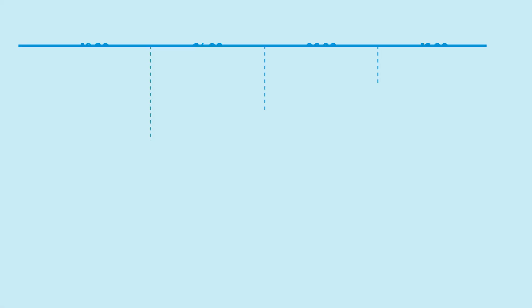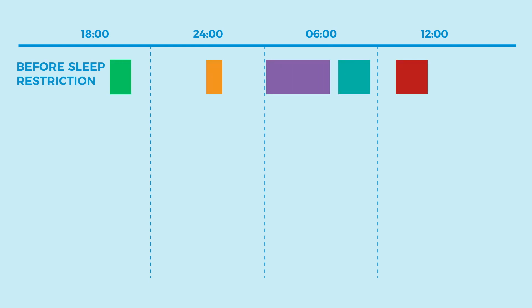Sleep restriction is really about being strict with yourself and only allowing yourself to sleep under certain circumstances. Look at this graph. Here we see a typical sleep pattern for a person with major sleep problems. This person goes to bed early, at 7 in the evening, but only sleeps a tiny half hour before awakening. The same happens several times during the night, and in addition the person sleeps a little at 12 o'clock.